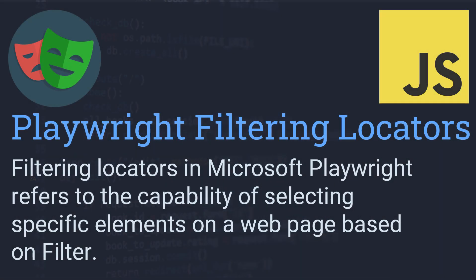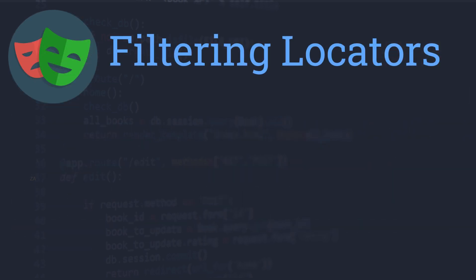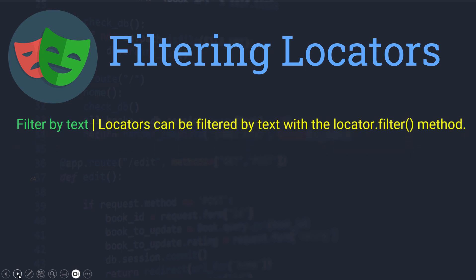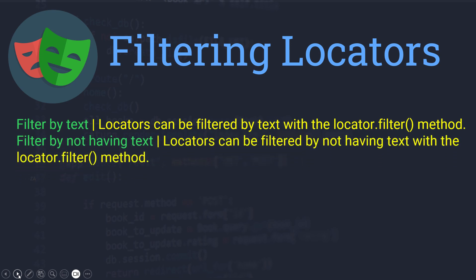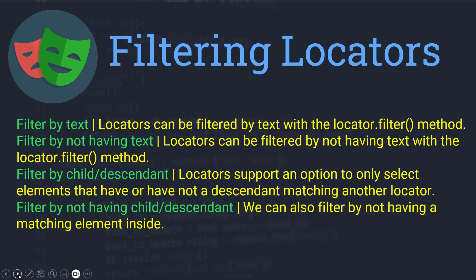Hello everyone and welcome to this Playwright tutorial. In this tutorial we will learn about filtering the locator. In Playwright you can filter the locator based on different criteria. When you have multiple options, you can filter based on the text and the descendant child. There are four ways: filter by text, not having the text, filter by child or descendant, and not having the child or descendant.